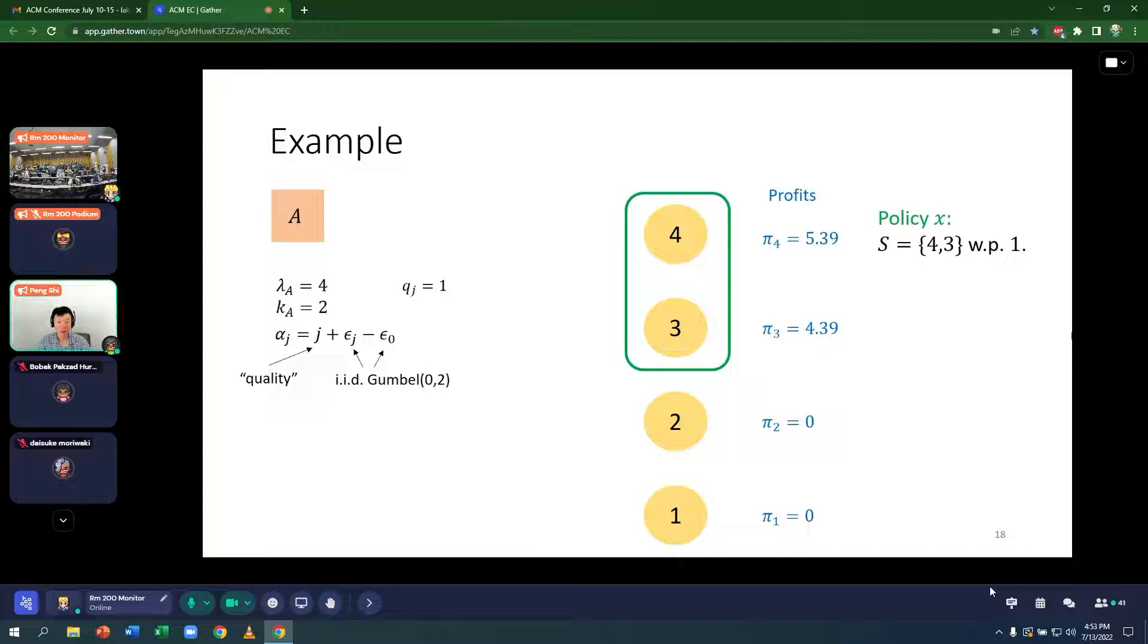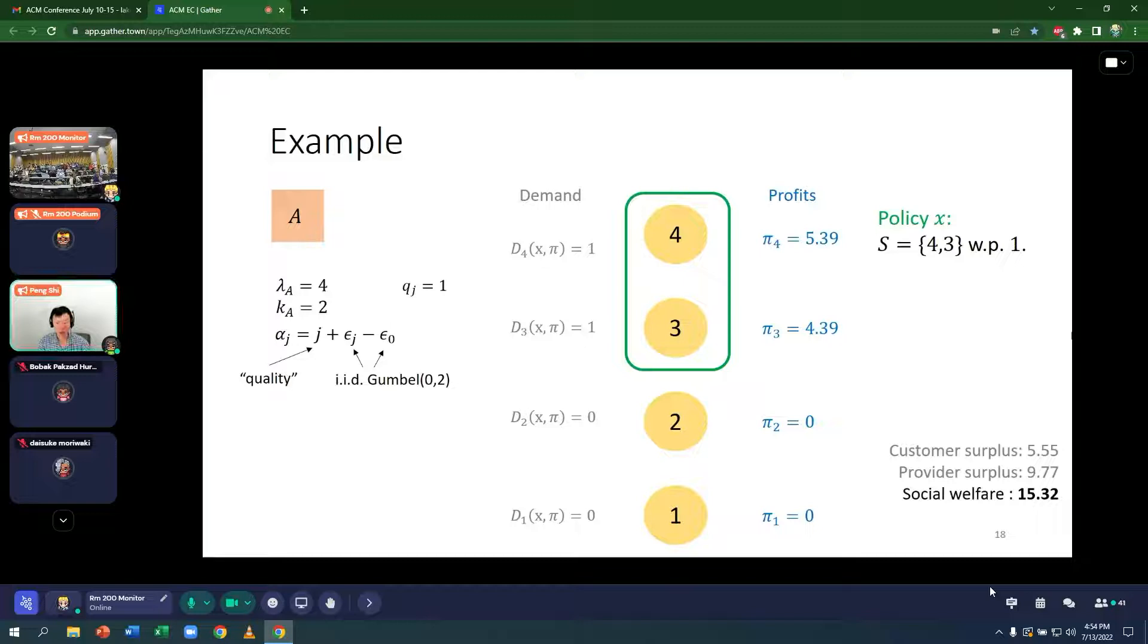And in fact, these profits are set so that the induced total demand for these providers 3 and 4 is equal to their capacity of 1. In other words, at low prices, they may have so much interest and endogenously, they increase their prices until the demand is at most their supply. Now, when we look at this policy, here is the customer surplus, provider surplus, as well as the social welfare.